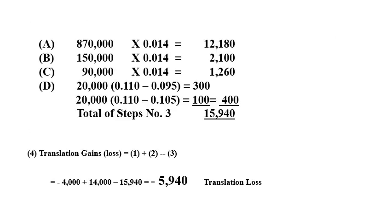Items a, b, and c are each multiplied by the current rate minus the average rate.